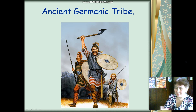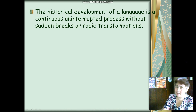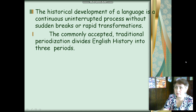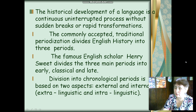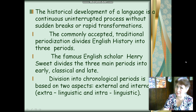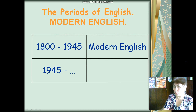Ancient Germanic tribes — their time is here. The historical development of language is continuous, an uninterrupted process without sudden breaks and rapid transformations. The commonly accepted traditional classification divides the history of English into three main periods. The famous English scholar Henry Sweet divides the three main periods into Late, Classical, and Early. Division into chronological periods is based on two aspects: internal and external, intralinguistic and extralinguistic. We will go from present to the past, as if we went inside time.